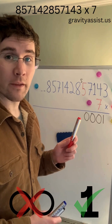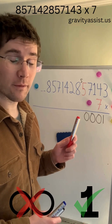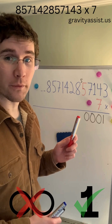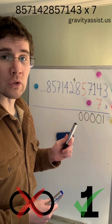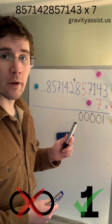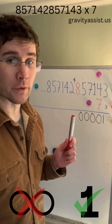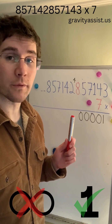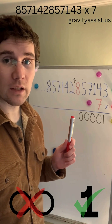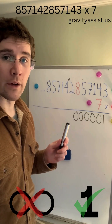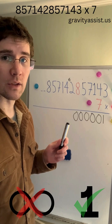7 times 5 equals 35 plus 5 equals 40, so we'll put a 0 down here and carry the 4. 7 times 8 equals 56 plus 4 equals 60, so we'll put a 0 down here and carry the 6.